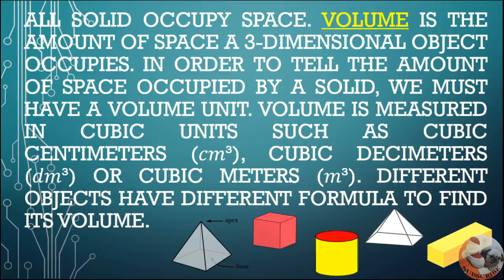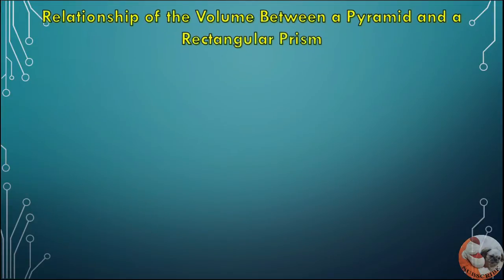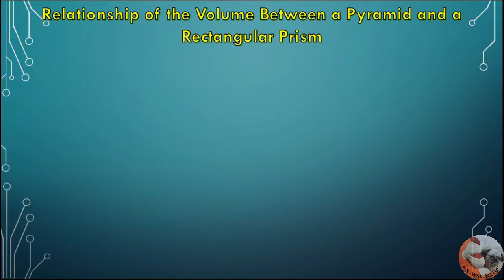Different objects have different formulas to find their volume. First, we have the relationship of the volume between a pyramid and a rectangular prism.